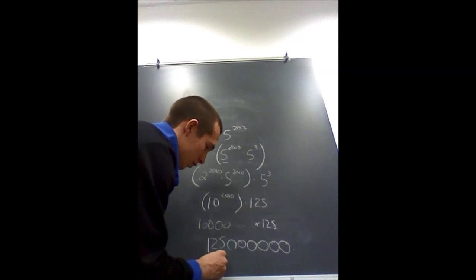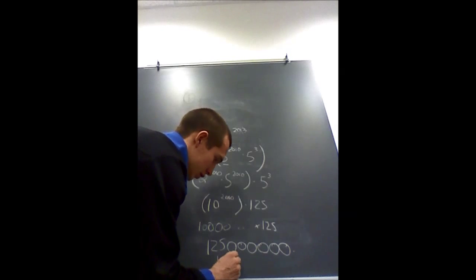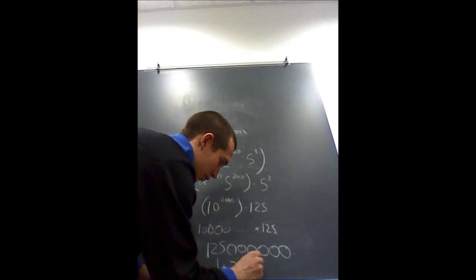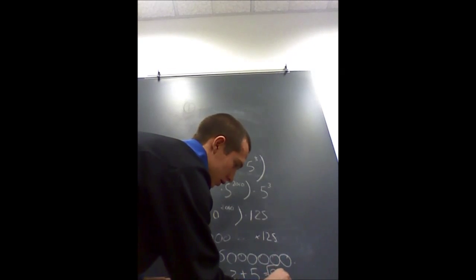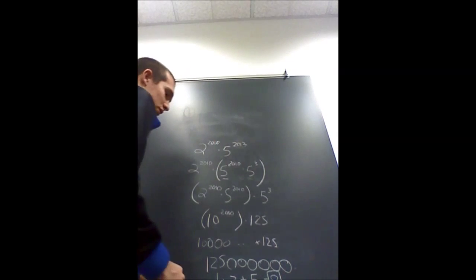So you would take 1 plus 2 plus 5, which would equal 8, which is the sum of the digits.